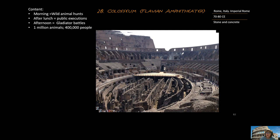After lunch there would be public executions of criminals, and then after that, gladiator battles. Gladiators were supported by owners who enrolled them in schools and hoped their gladiators would do well. Owners did not want their gladiators killed because they had invested a fair amount of money in their training. By the end of the Roman Empire, it is estimated that about a million animals and 400,000 people were killed at the Colosseum.